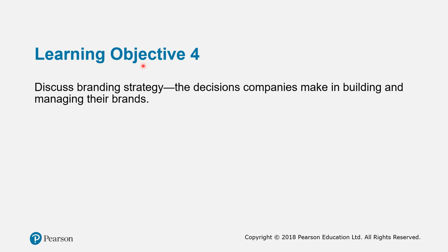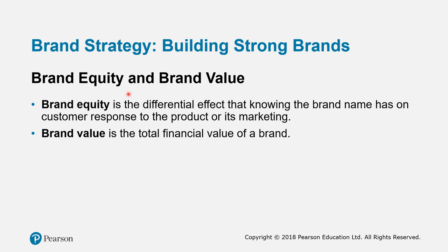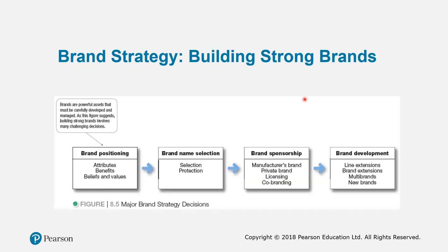The last topic in this chapter is branding strategy — how companies build and manage their brands. There are two key aspects: brand equity, which is the differential effect that knowing the brand name has on customer response; and brand value, which is the total financial value of a brand. The major brand strategy decisions include brand positioning, brand name selection, brand sponsorship, and brand development.